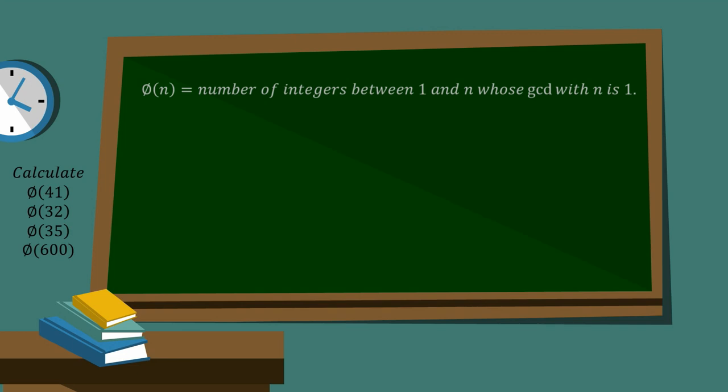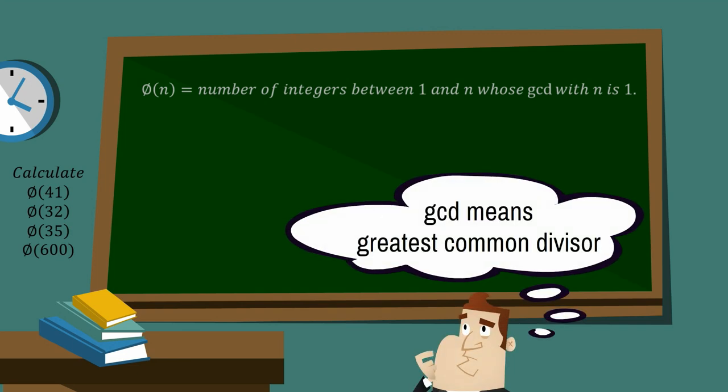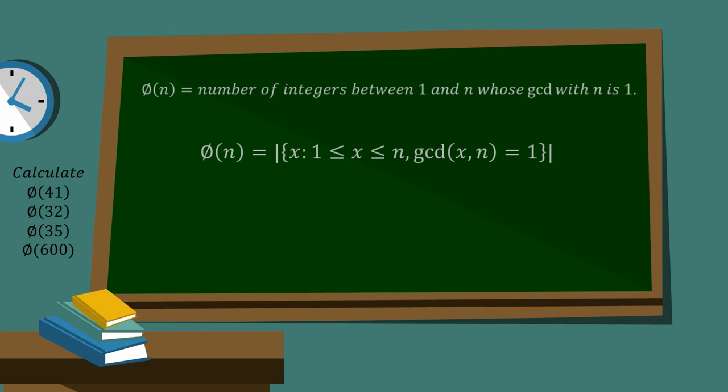Let's talk about phi, the Euler-Totient function. In English, it's the number of integers between 1 and n whose GCD with n is 1. If you'd like to look at it more mathematically, we can create a set, and these two vertical lines mean we count the number of elements of the set, and it's the set of x where x is between 1 and n and the GCD of x and n is equal to 1.